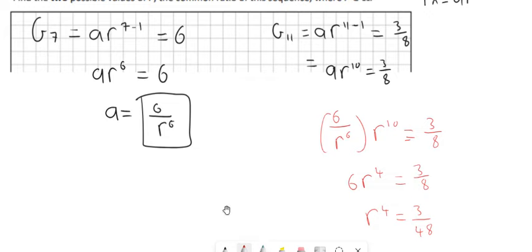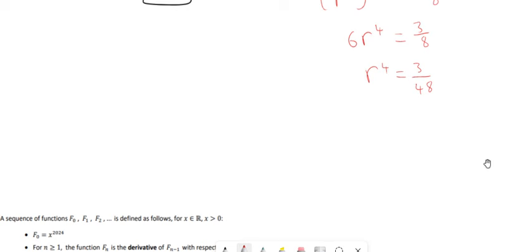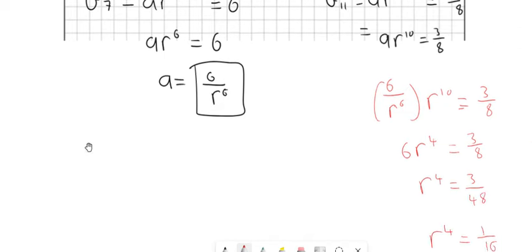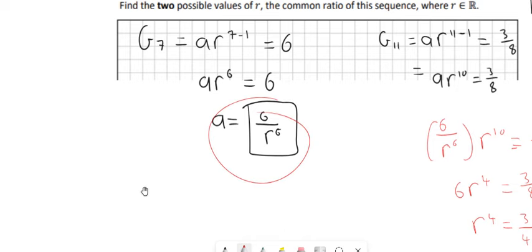And then you can put in the 4th root into your calculator if you want or you might be able to see that it's going to be 1 over 2. So R then is equal to 1 over 2. Now it says back in the question that there's going to be two answers, so if you think about it, it could also be minus 1 over 2, because minus a half to the power of 4 would be 1 over 16 as well. So those are our two answers for R and that was all we needed to do there.